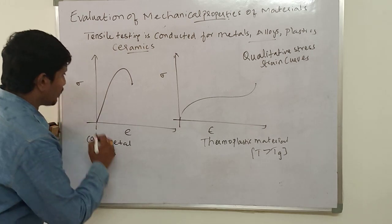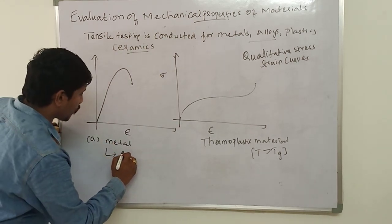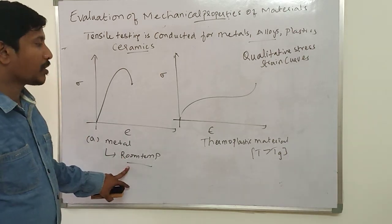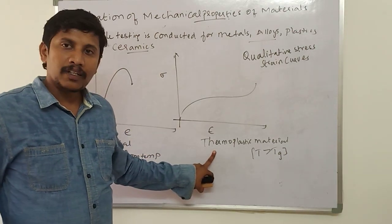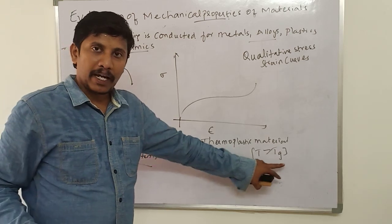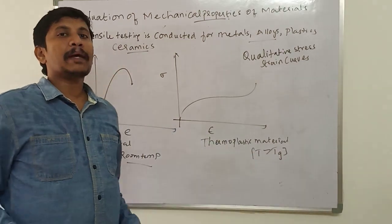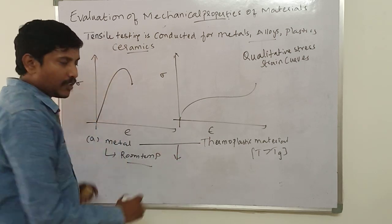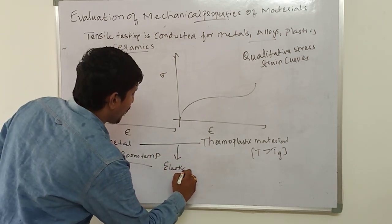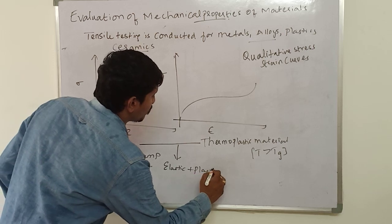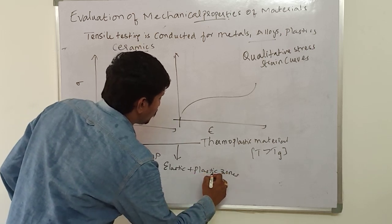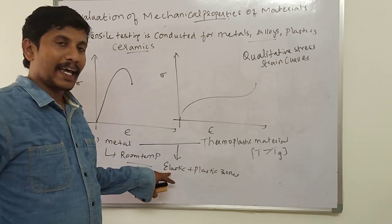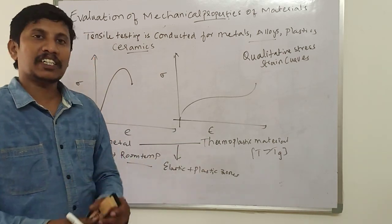Metal tensile testing is performed at room temperature, while for thermoplastic material, it is conducted at a temperature more than the glass transition temperature. Both metal and thermoplastic material exhibit elastic plus plastic zones.